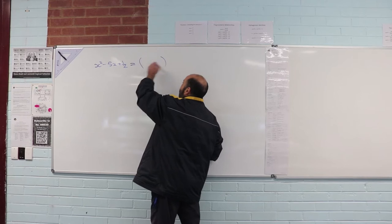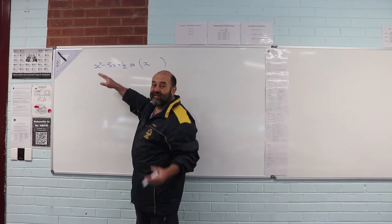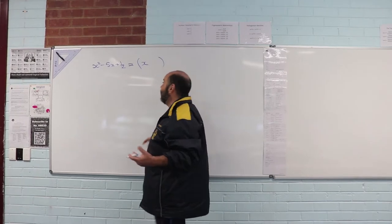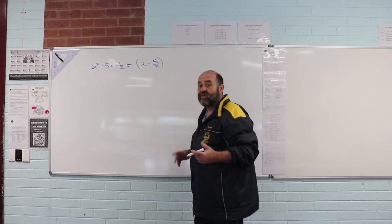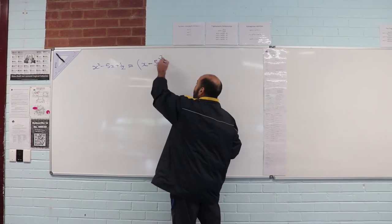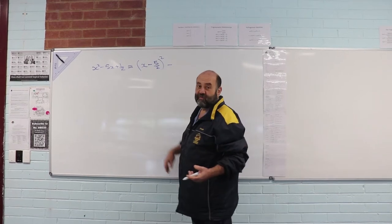So to complete the square on x² - 5x, I halve the coefficient of x. So that's going to be -5/2. Then I square, and then I subtract the square of -5/2.